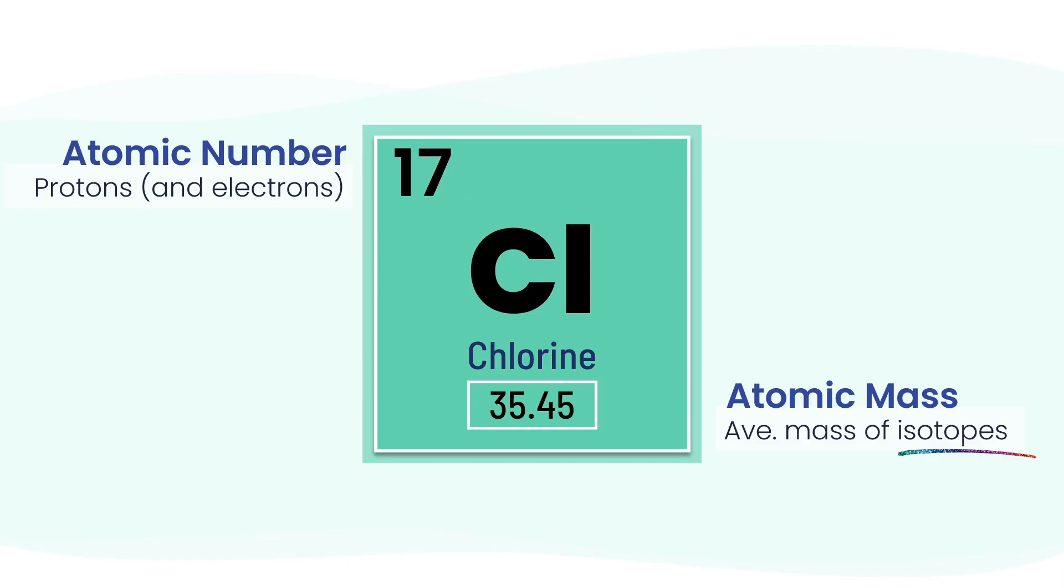So why isn't the mass a nice round number? It's because not all chlorine atoms are exactly the same.